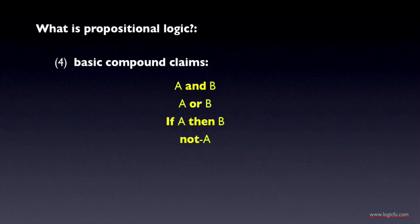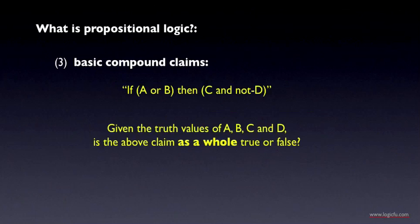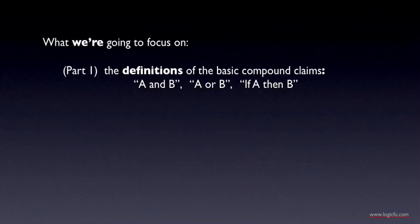'If A or B is true, then C is true and D is not true.' Given the truth values of all of the component claims, you can work out the truth value of the compound claim. This is the kind of exercise you might do in a formal logic course, but it's really not what we're going to focus on in this course. We're going to focus on understanding the basic logical concepts that are derived from propositional logic.